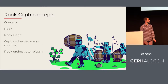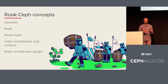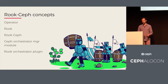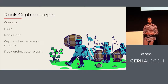There's also the Ceph Orchestrator Manager module, which gives us an interface — an API and a CLI — for communicating with an orchestrator, whether that's Ansible, DeepSea, or Rook. Because we're focusing on Rook, there's also the Rook Orchestrator plugin, which will translate those API or CLI commands into a domain the orchestrator understands.